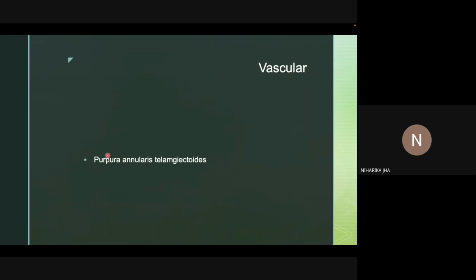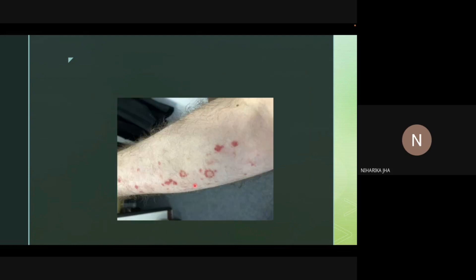Among vascular diseases with annular appearance, purpura annularis telangiectoides — also known as Majocchi's disease — is a type of pigmented purpuric disorder. Characteristic pepper spot findings are seen in this condition.